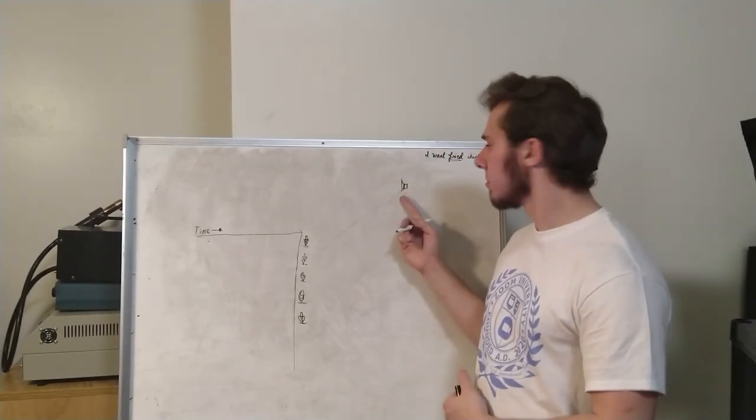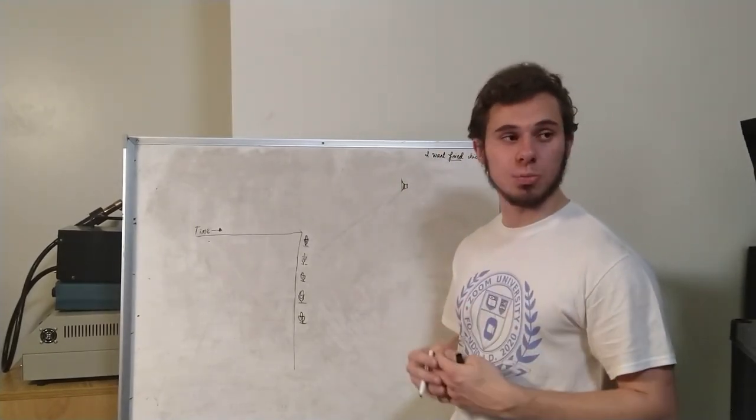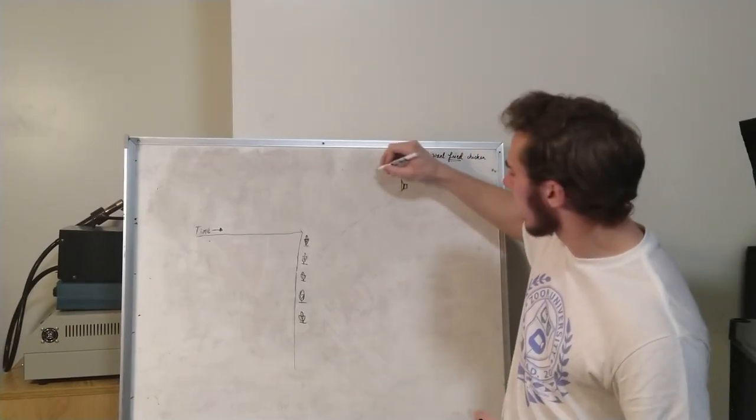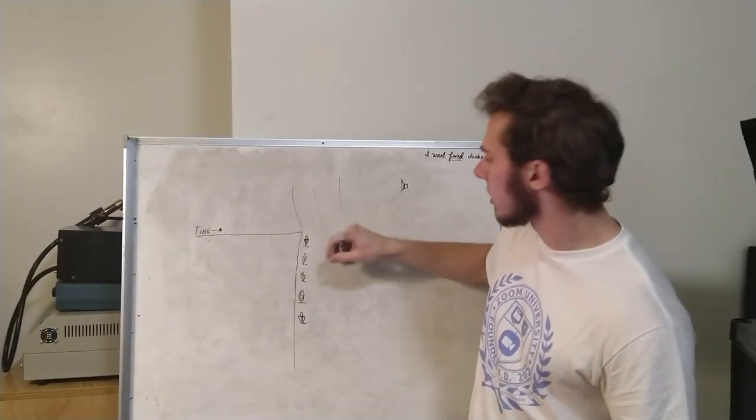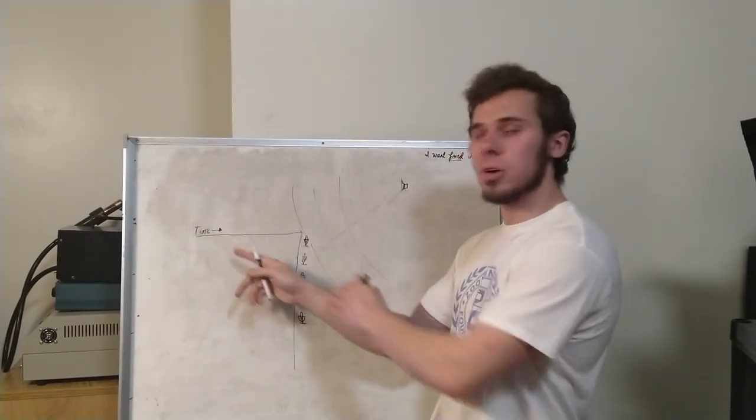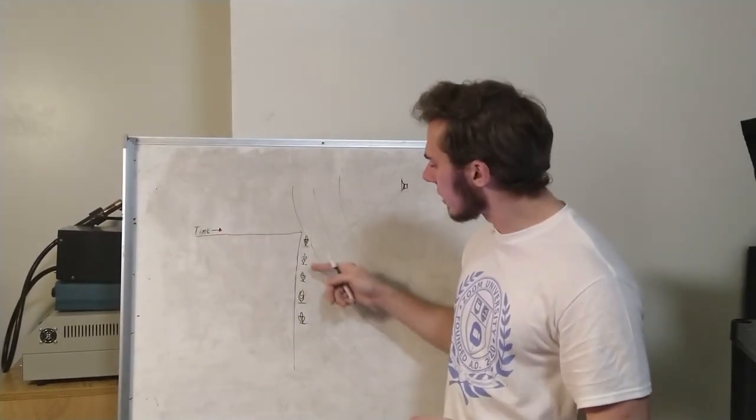So if we imagine we've got a speaker here, then sound that comes out of it is going to move outward in a sphere. So we can start drawing the waves as they come out of the speaker. We can see that they hit the first microphone in the array here. Now we've got a graph here of time versus when the sound wave hits each element in the array.